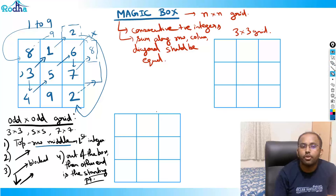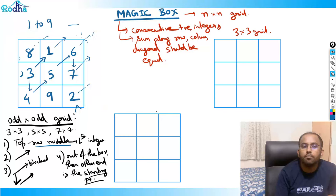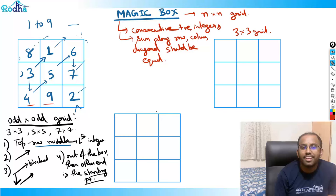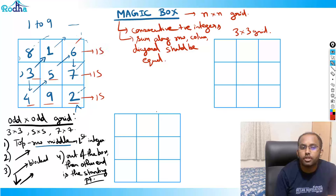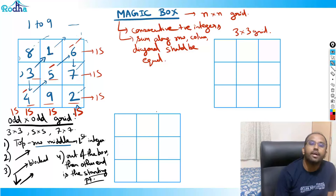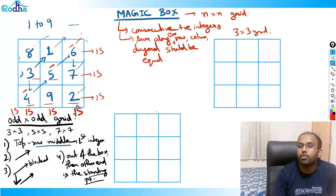See? This is magic! Now let's check. 4 + 9 + 2 = 15. 3 + 5 + 7 = 15. 8 + 1 + 6 = 15. 6 + 7 + 2 = 15. 1 + 5 + 9 = 15. 8 + 3 + 4 = 15. 6 + 5 + 4 = 15. Every row, column, and diagonal sums to 15.